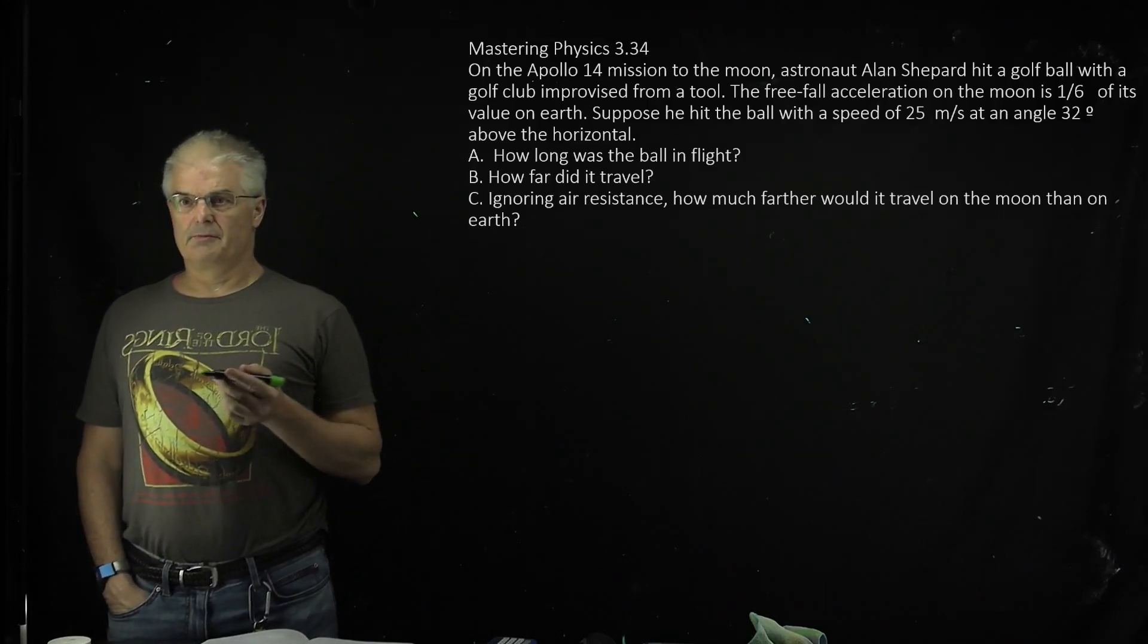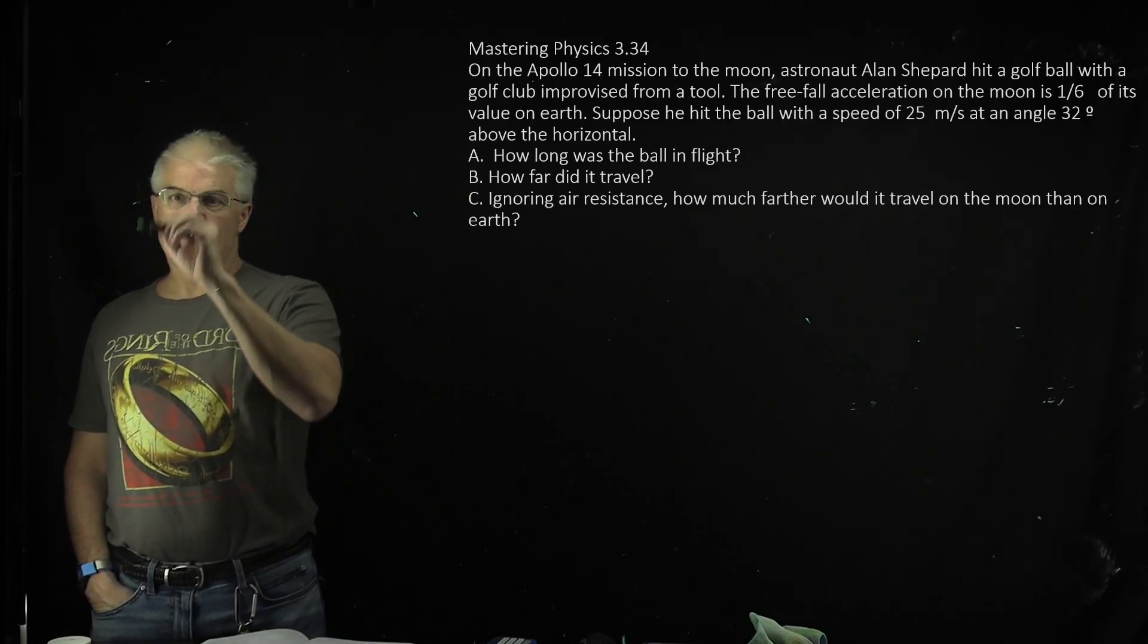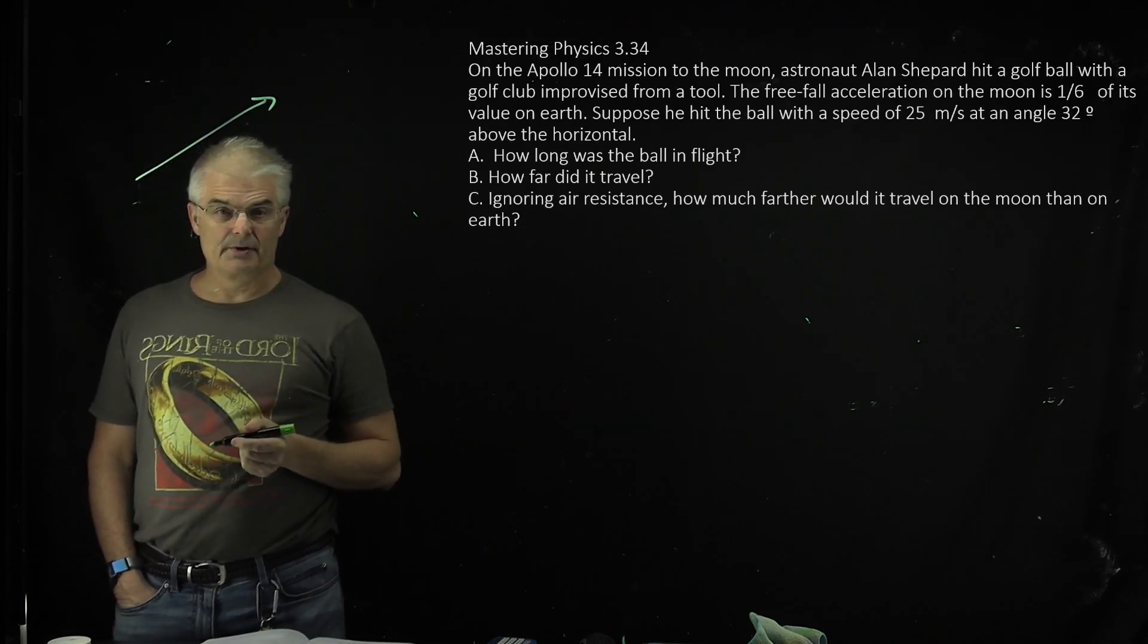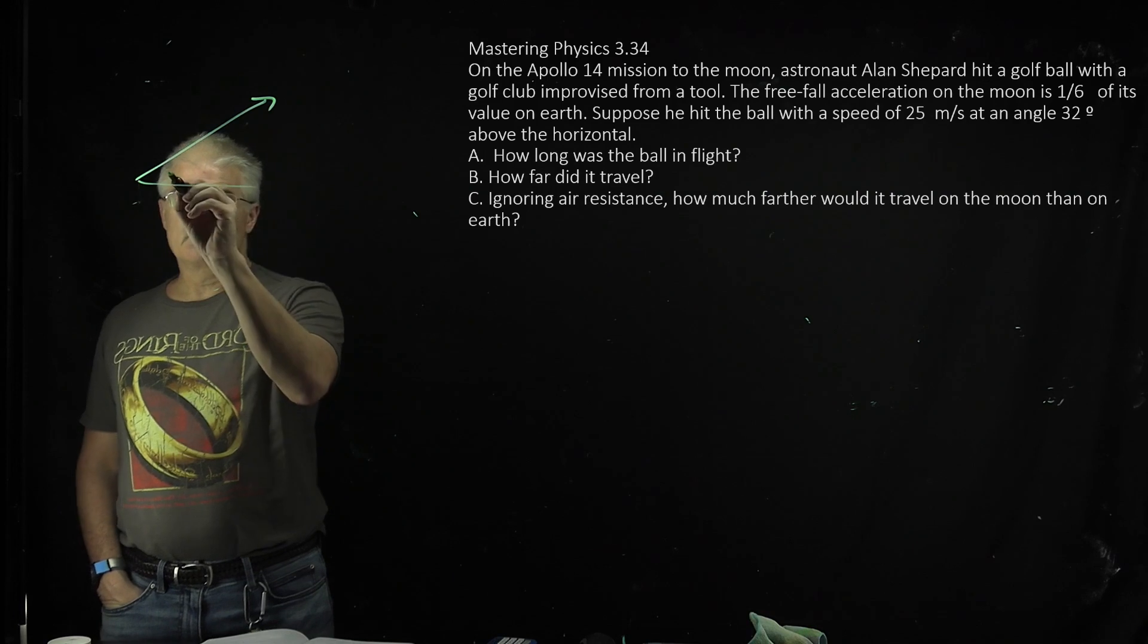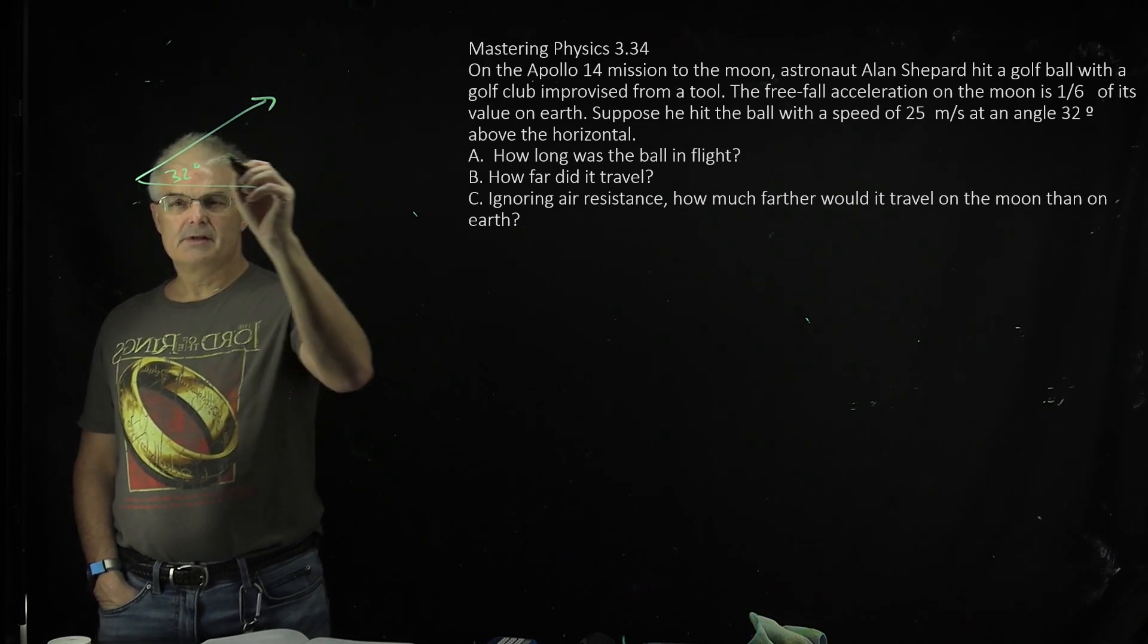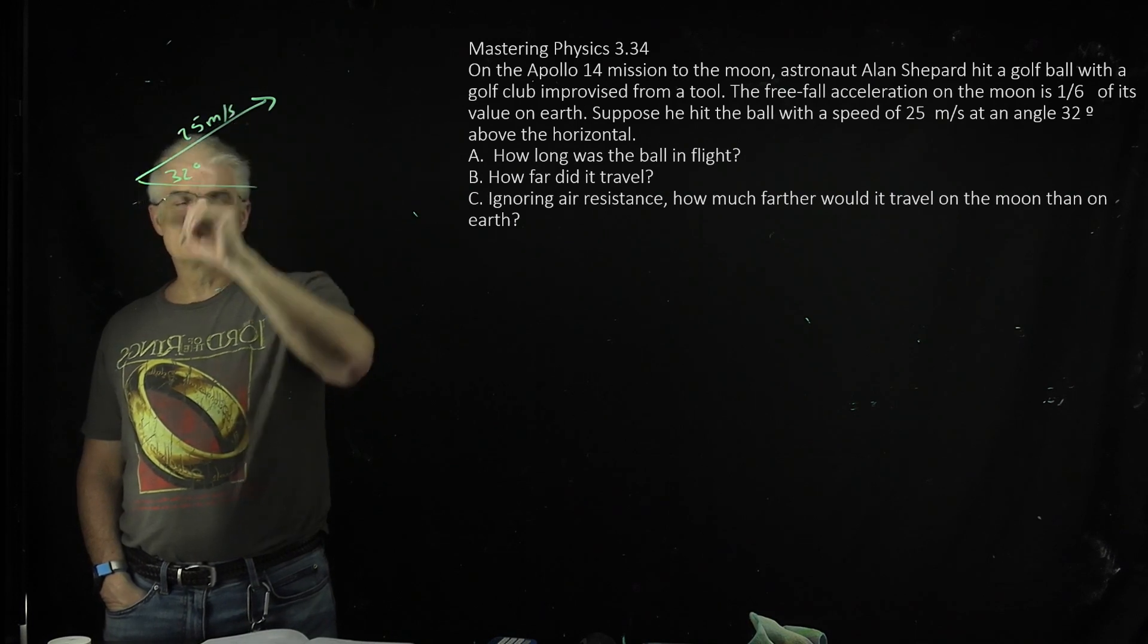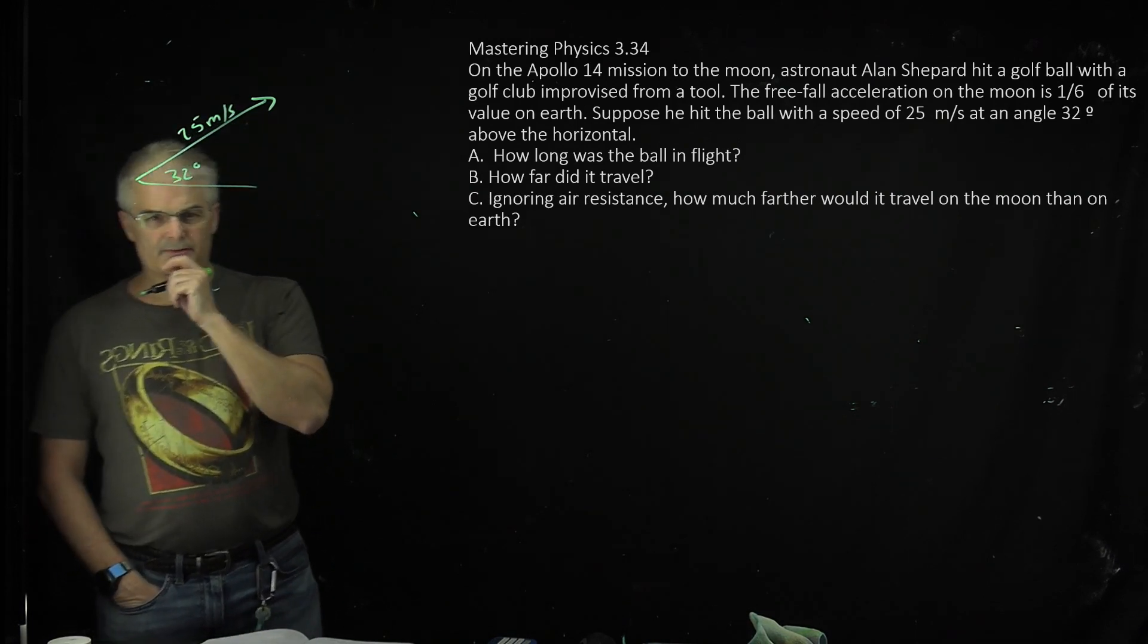Alright, this is a projectile motion problem. So you're doing a projectile motion problem and we have an angle. So you're on the moon. Alan Shepard is doing his thing. He's shooting a golf ball at 32 degrees with a speed of 25 meters per second. And the question is, how long was the ball in flight?